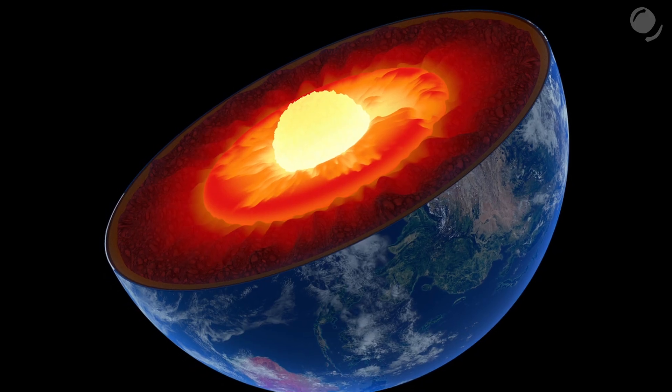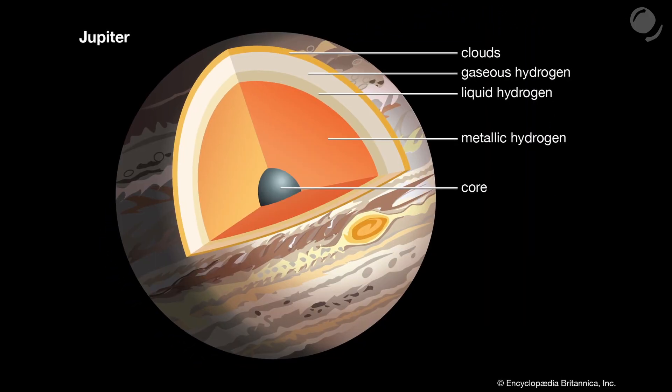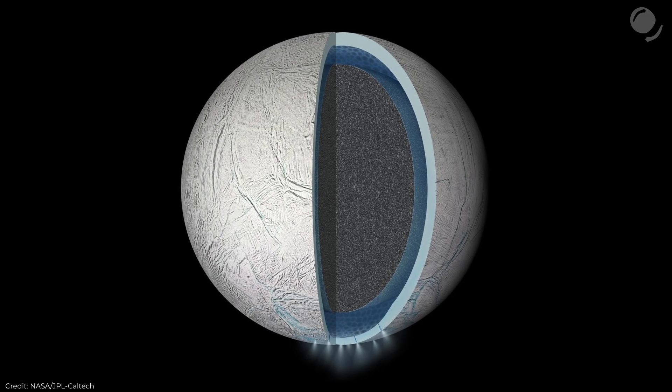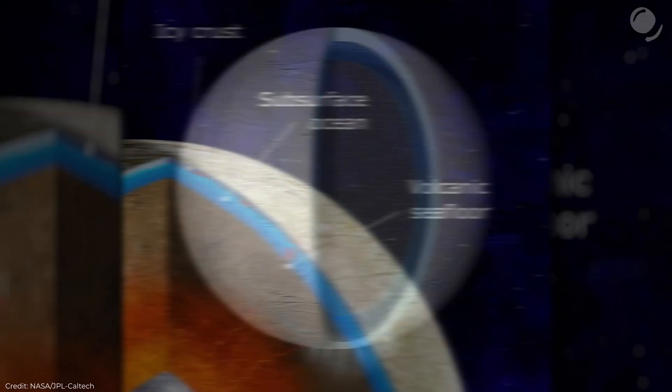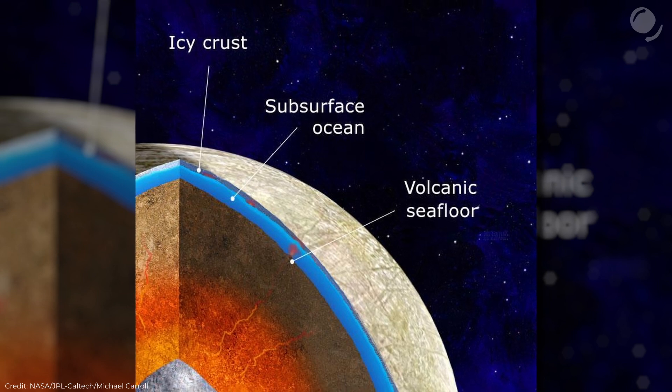Hi, my name is Andrey and this is Cosmos Elementary. How to learn what is inside planets and moons without digging thousands of kilometers down? There are actually many ways. We know some things about the internal structure of our planet, as well as Jupiter and such moons as Enceladus and Europa. In those cases, various methods and their combinations were applied.